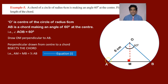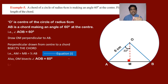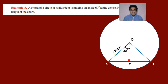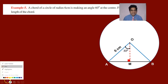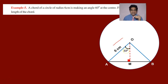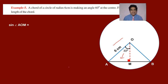OM is a perpendicular bisector, so it also bisects the angle — angle AOM is 30 degrees. Consider triangle AMO: we have an angle of 30 degrees and the hypotenuse OA. The angle is AOM and we need the ratio between the opposite side and the hypotenuse. So we calculate sine of angle AOM.